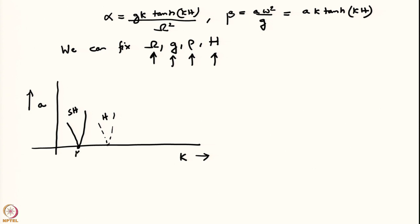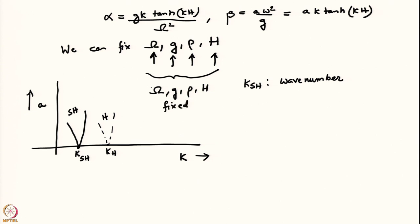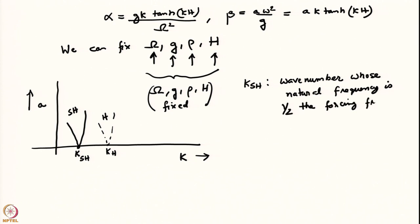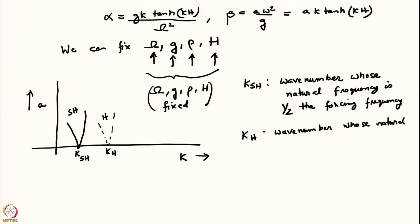On the dimensional a-k chart there are also tongue-like structures — sub-harmonic and harmonic and so on. The important question is: what are these wave numbers? k_subharmonic is that wave number whose natural frequency is one half the forcing frequency. k_harmonic is that wave number whose natural frequency equals the forcing frequency.